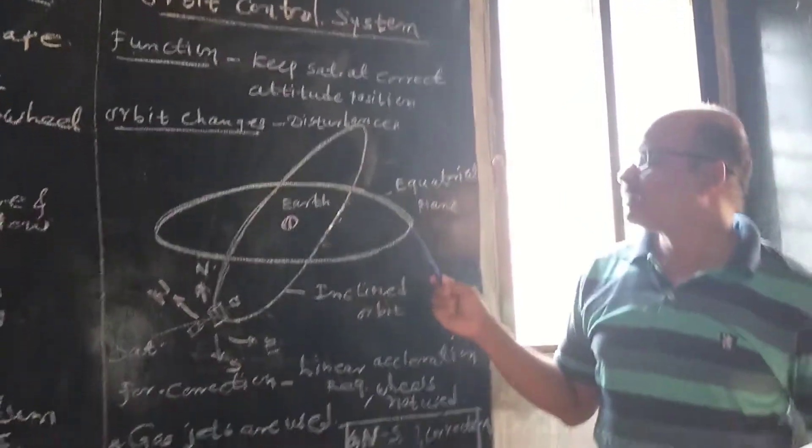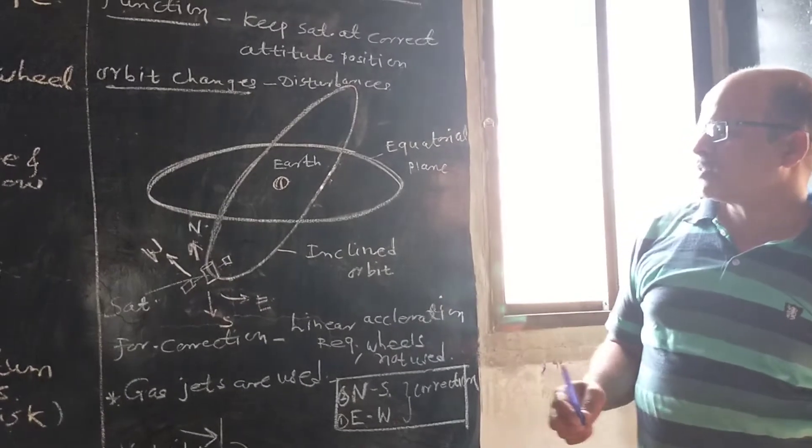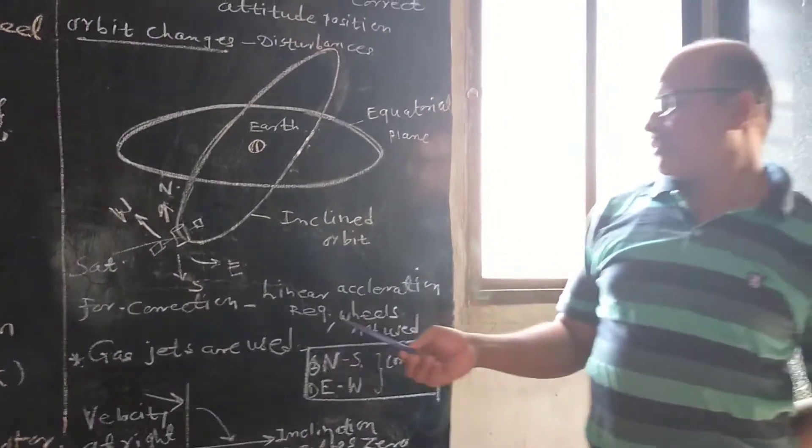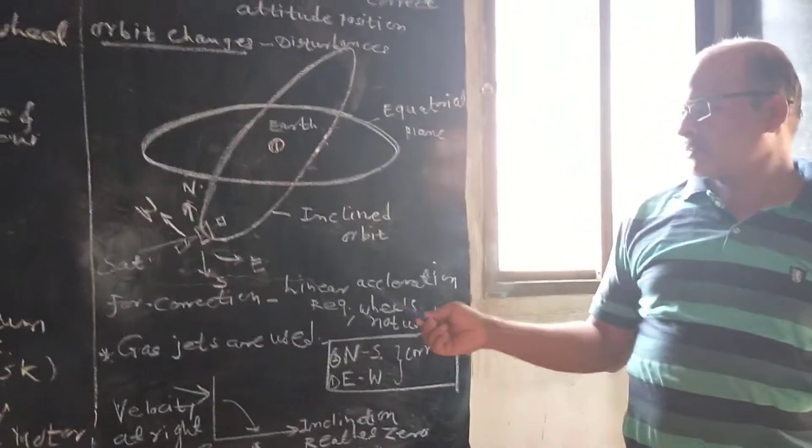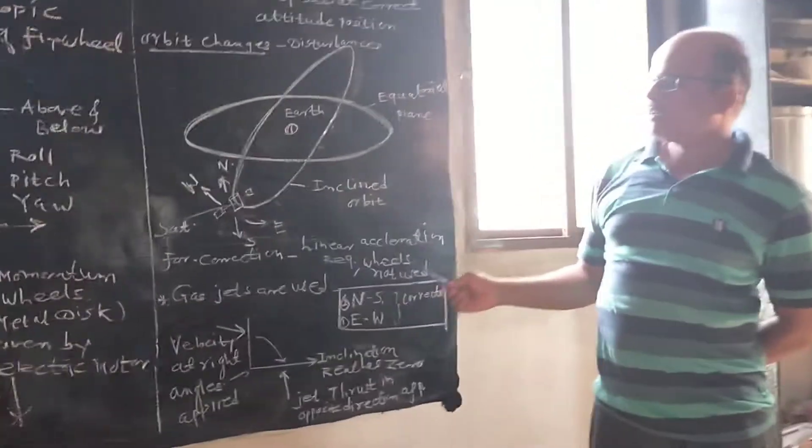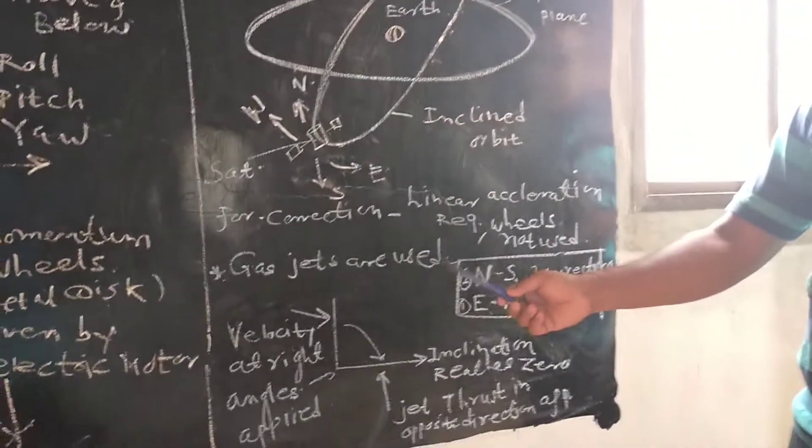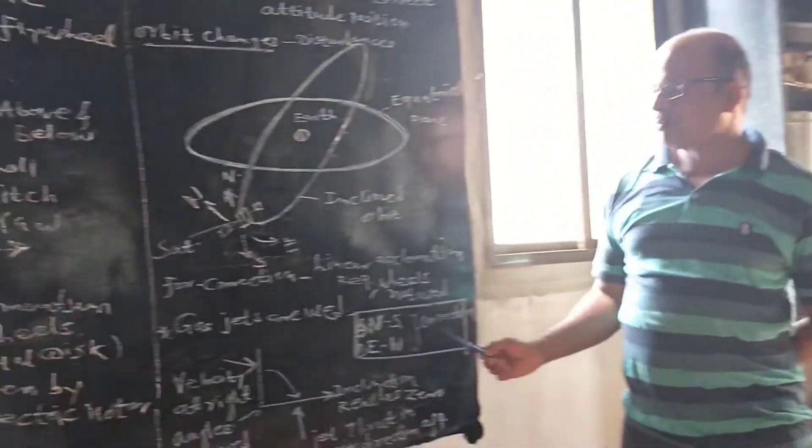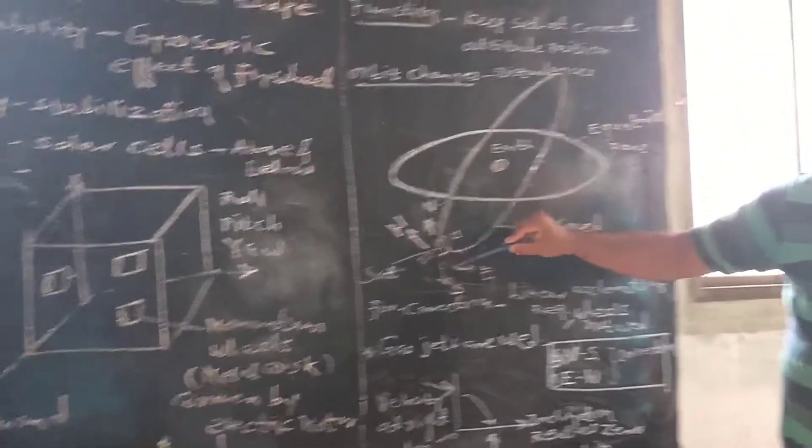Then next, as shown in this figure, in this orbit control system, generally correction of orbit, linear acceleration is required. As linear acceleration is required, wheels cannot be used for the correction. Therefore, gas jets are used to control the orbit. Generally, there are two types of corrections, that is north-south correction, and east-west correction. Generally, first east and west correction is firstly provided, and after two weeks, north and south correction is provided.